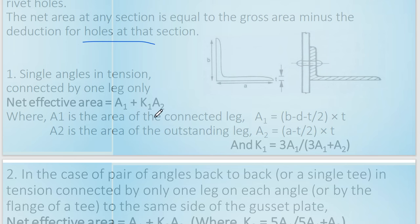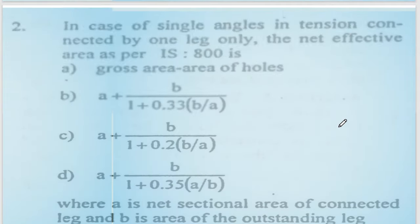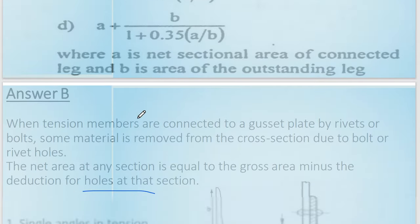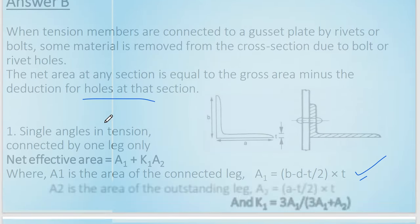We substitute the A1 and A2 values into the net effective area formula: A1 plus K1·A2. Ultimately, we get the net effective area. The answer is option number B.